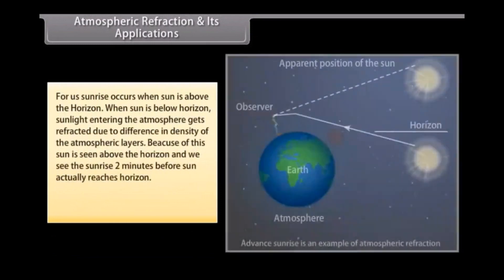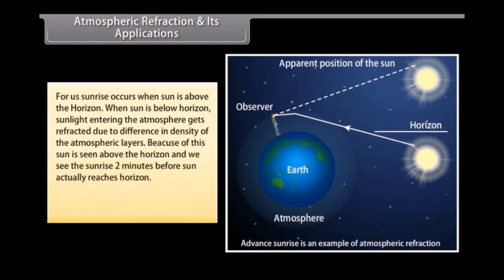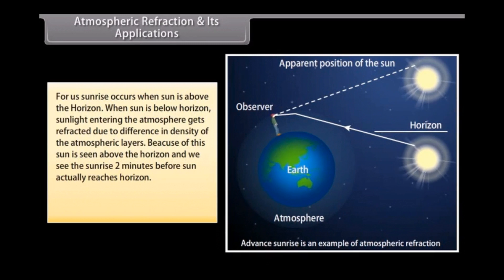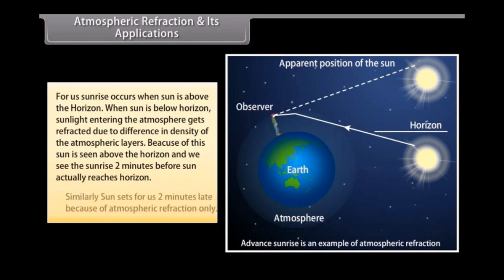Sunrise occurs for us when the sun is above the horizon. When the sun is actually below the horizon, sunlight entering the atmosphere gets refracted due to differences in density of the atmospheric layers, making the sun appear above the horizon. As a result, we see the sunrise about two minutes before the sun actually reaches the horizon, and similarly the sun sets for us two minutes late because of atmospheric refraction.